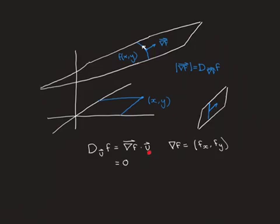So we want a vector where if you dot product it with the gradient vector u gives zero — that's a vector that's going to be perpendicular to the gradient vector. We have therefore shown, without actually even having to work out u, that it must be perpendicular to the gradient vector, and therefore the gradient vector must point in the direction of maximum ascent.